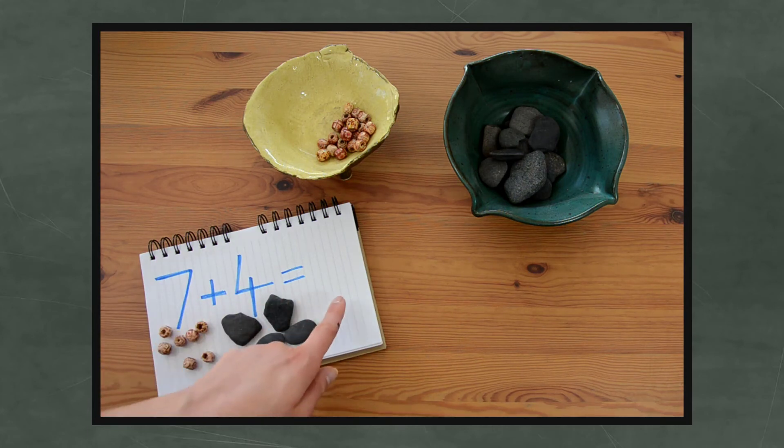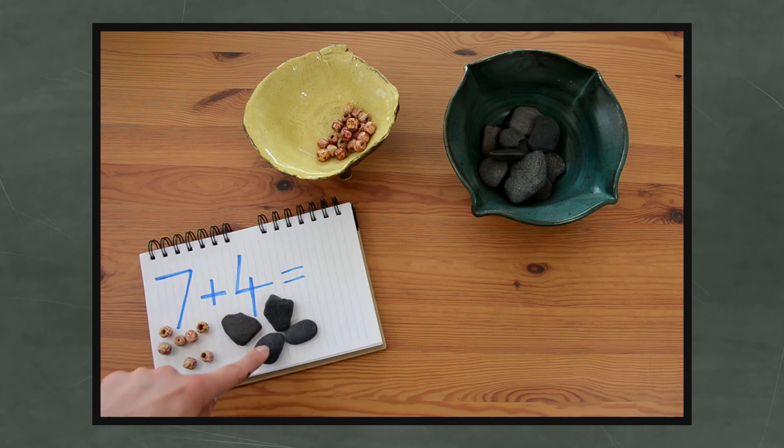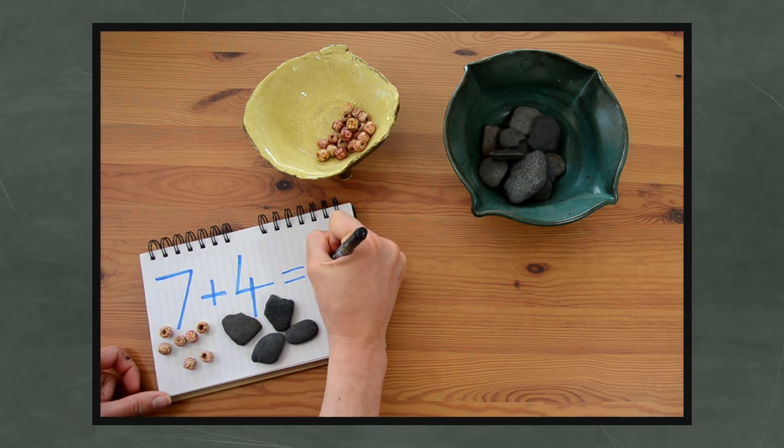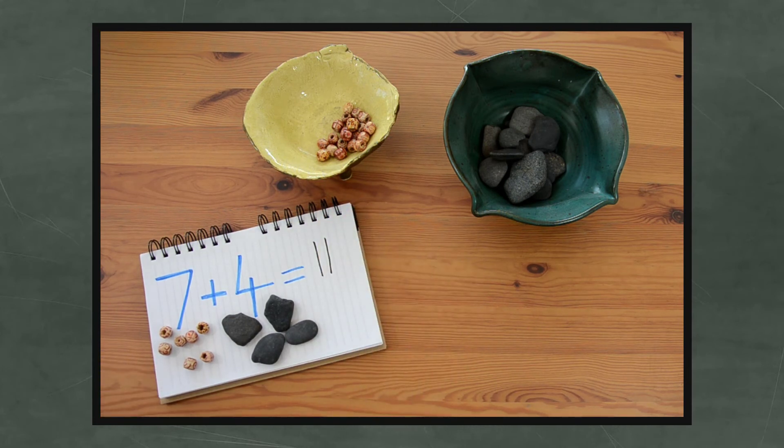Now I need to find out my answer. 1, 2, 3, 4, 5, 6, 7, 8, 9, 10, 11. So 7 plus 4 equals 11. And 11 is a 1 and a 1. Good work.